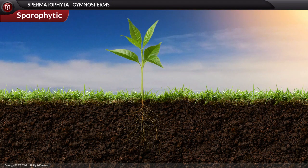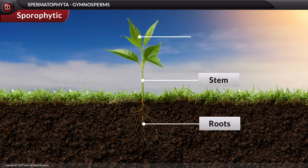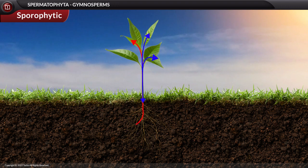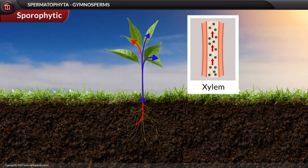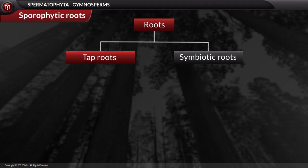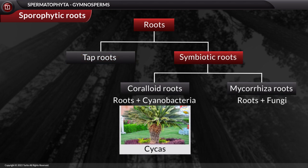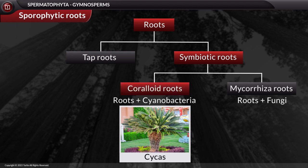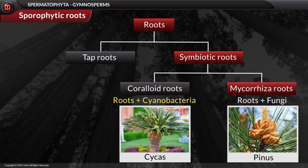The sporophytic plant body is well differentiated into roots, stem, and leaves. All these organs possess well-developed vascular tissues — the xylem and phloem. Roots are generally tap roots, and in some species roots exhibit symbiotic association. In Cycas, roots are called coralloid roots, which are in symbiotic association with cyanobacteria, and in Pinus, roots are called mycorrhiza, which are in symbiotic association with fungi.